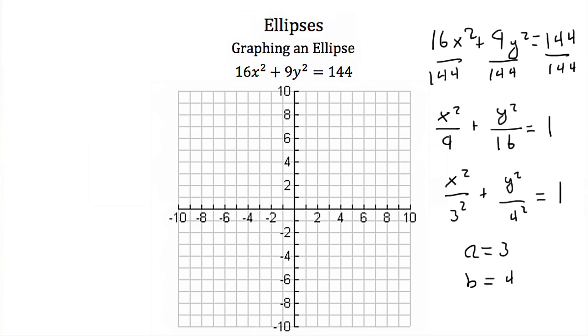Now the center of my ellipse is at the origin. My a values are my x values from the center to my vertices in that direction. So if we go from 0,0 and we go to the right 3 we'll have that point there and if we go to the left 3 we'll have that point right there.